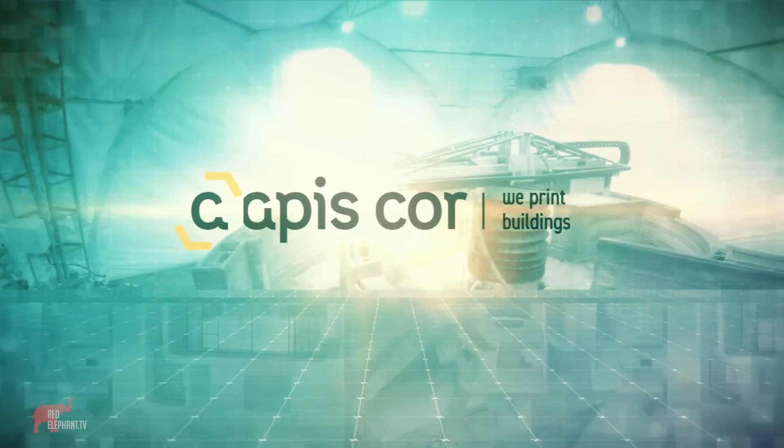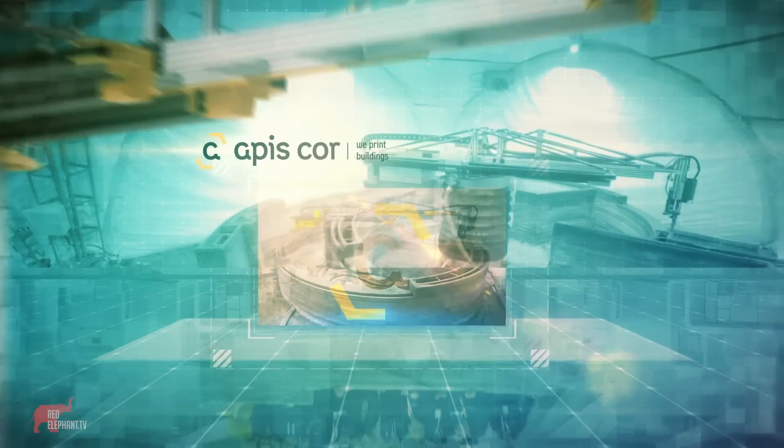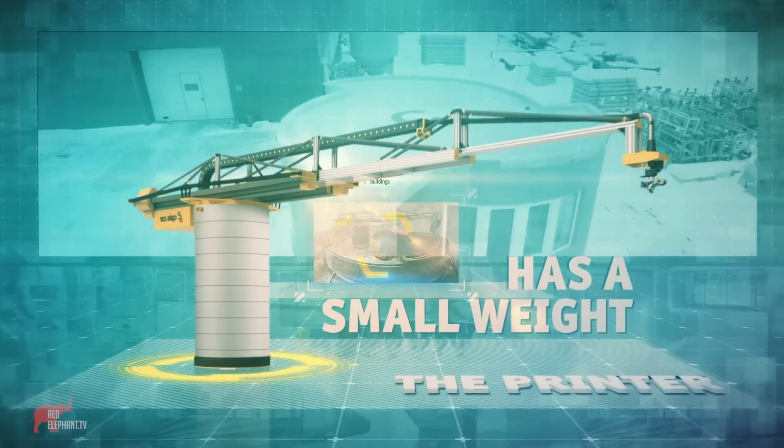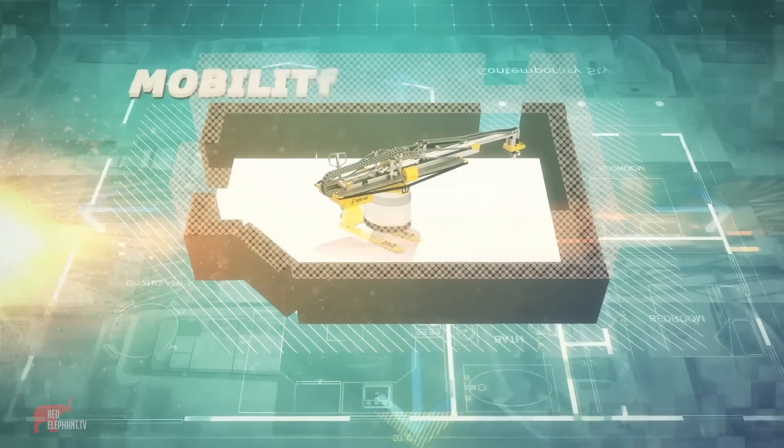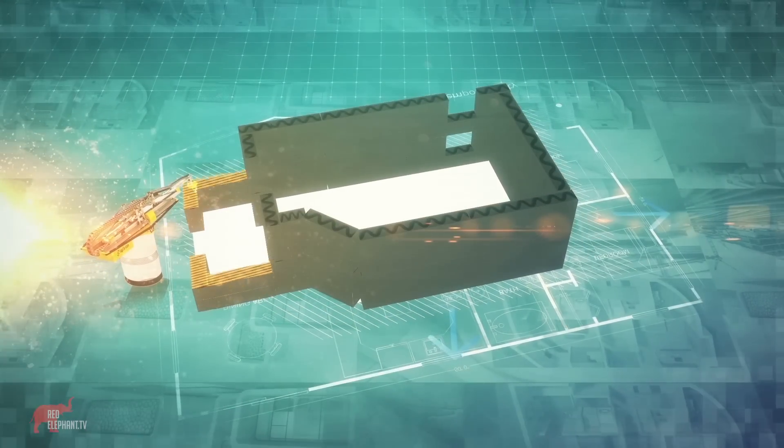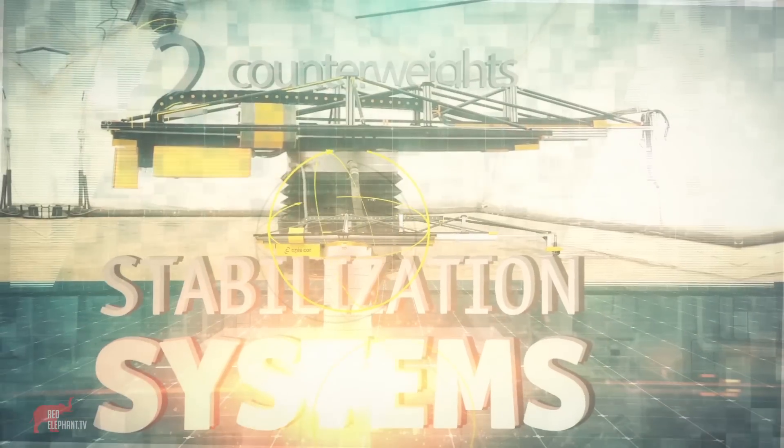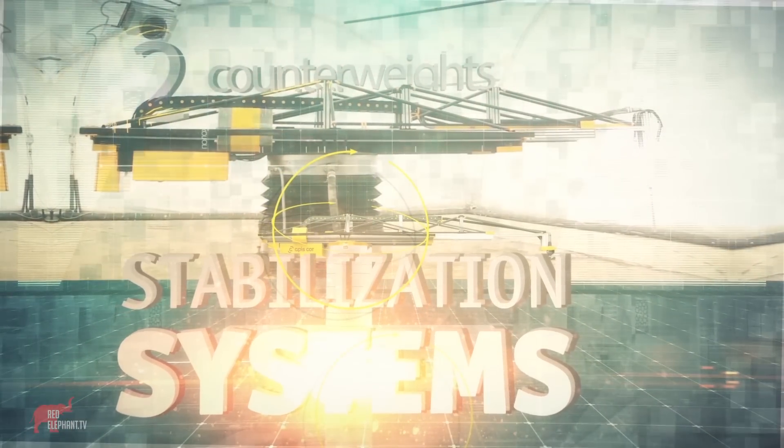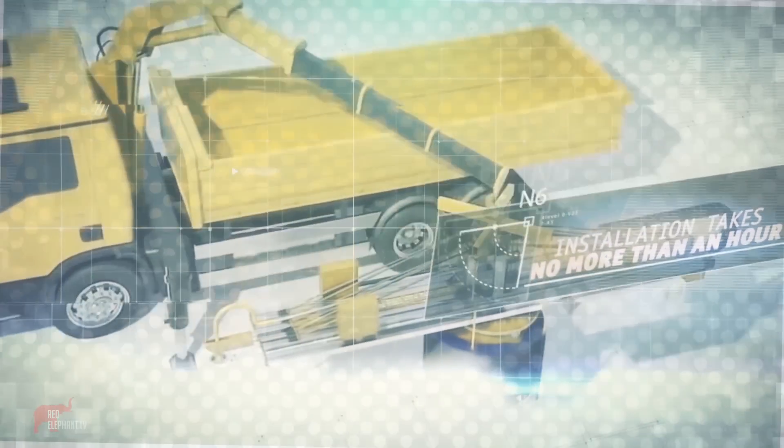So, what solution did APIS Core offer? The printer is light in weight. One can print a building with no limits in square size just by moving it around. Thanks to stabilization systems, the APIS Core printer will not topple over, and its installation in a location takes no more than an hour.